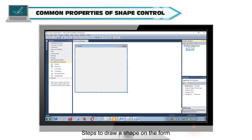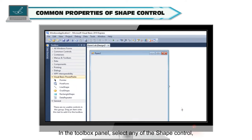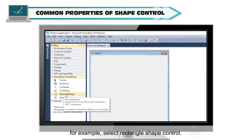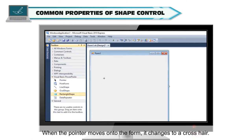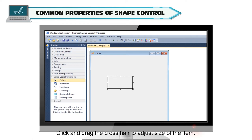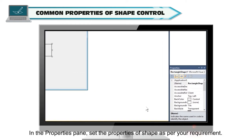Steps to draw a shape on the form: In the Toolbox panel, select any of the shape controls — for example, select the rectangle shape control. When the pointer moves onto the form, it changes to a crosshair. Click and drag the crosshair to adjust the size of the item. In the Properties pane, set the properties of the shape as per your requirement.